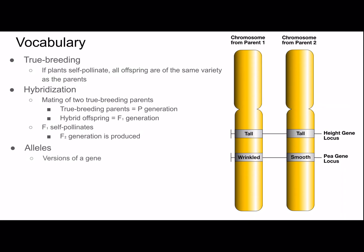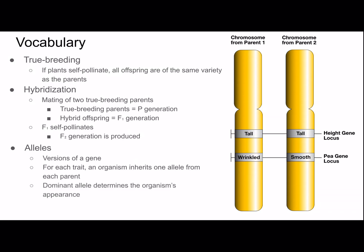Alleles are versions of a gene. For each trait, an organism inherits one allele from each parent. So in this example — chromosomes in pea plants — there's one chromosome from each parent. The alleles are tall, wrinkled, and smooth. This individual doesn't have a short allele. The dominant allele determines the organism's appearance, and the recessive allele will have no effect on appearance. So in this case, the pea plant is tall and has smooth peas, because smooth is dominant to wrinkled. Locus means the location of the gene on the chromosome.